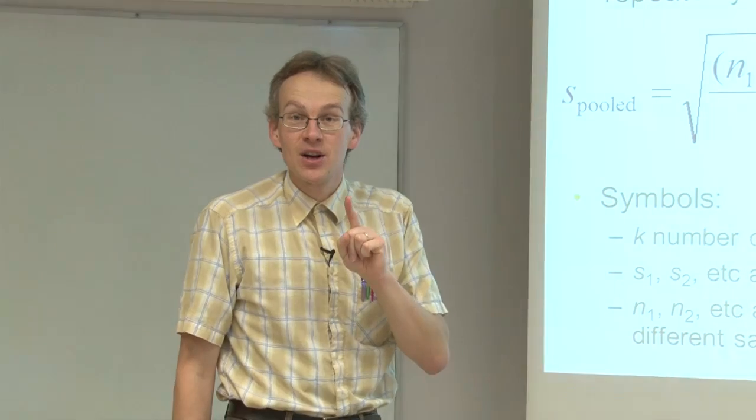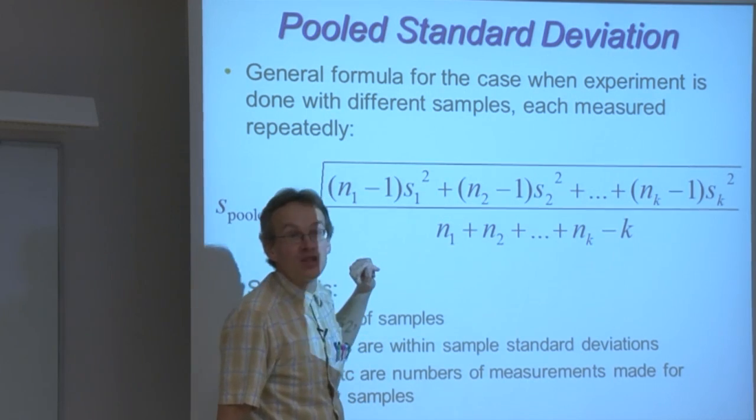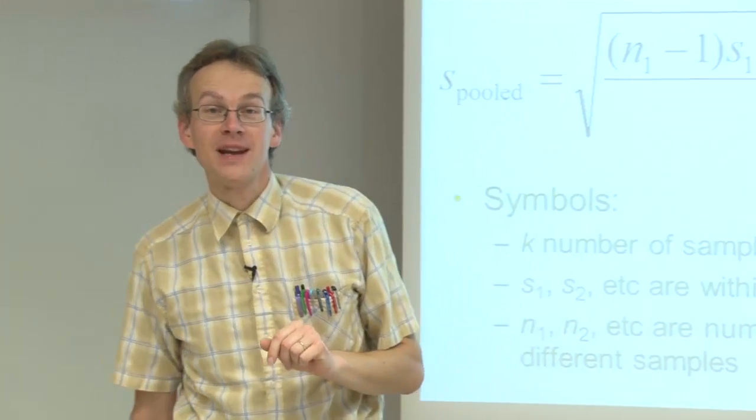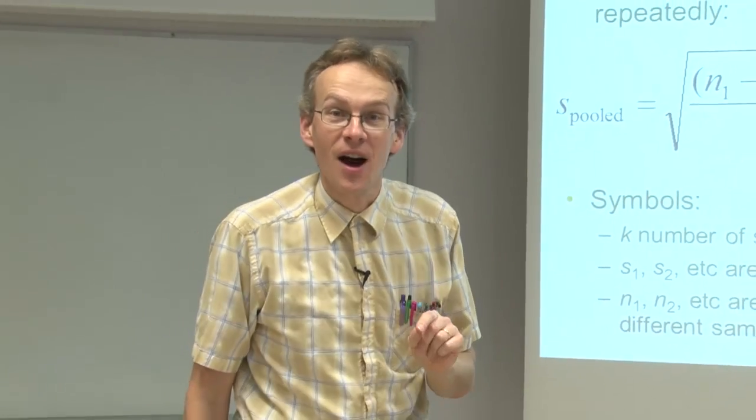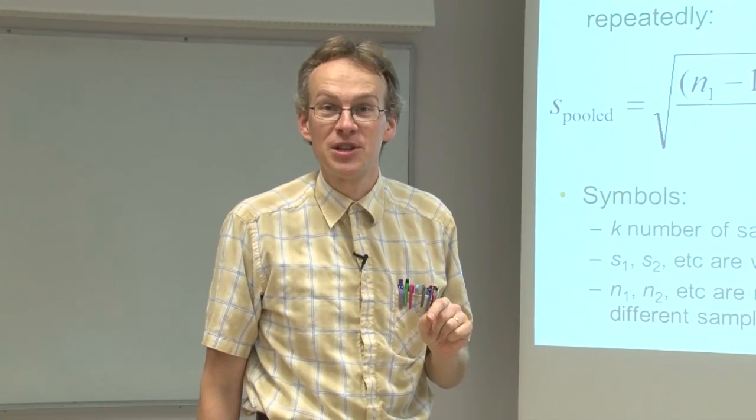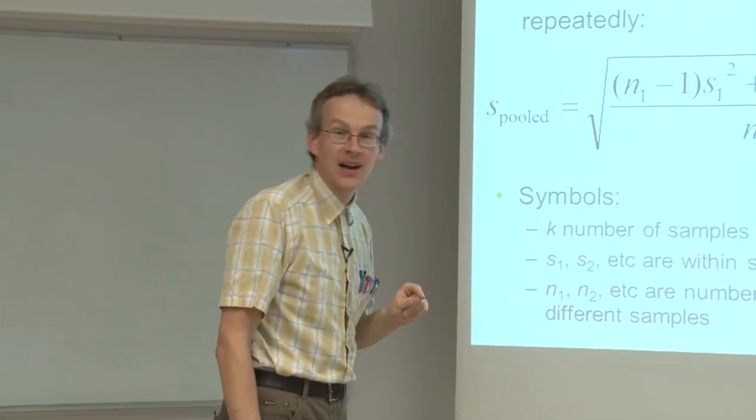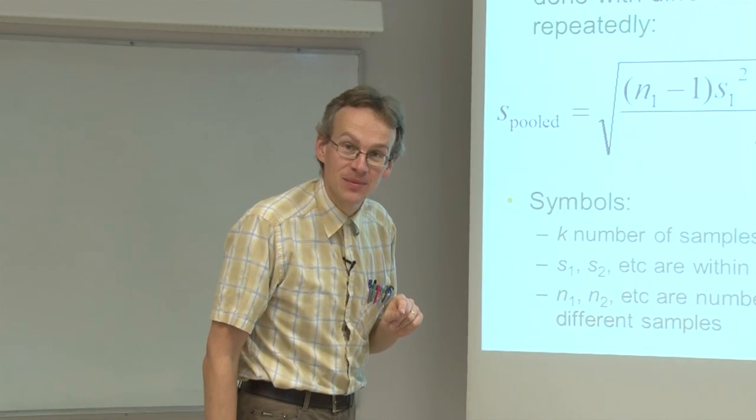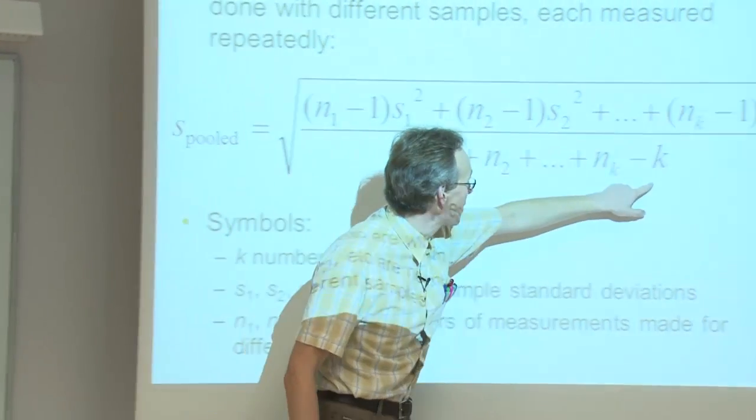The good thing about pooled standard deviation is that you can involve a large number of samples, at the same time with each sample, the number of measurements can be very small. In fact, it is enough if with each sample just two measurements are made, as long as you have many samples. And the number of degrees of freedom for pooled standard deviation is in fact this number here.